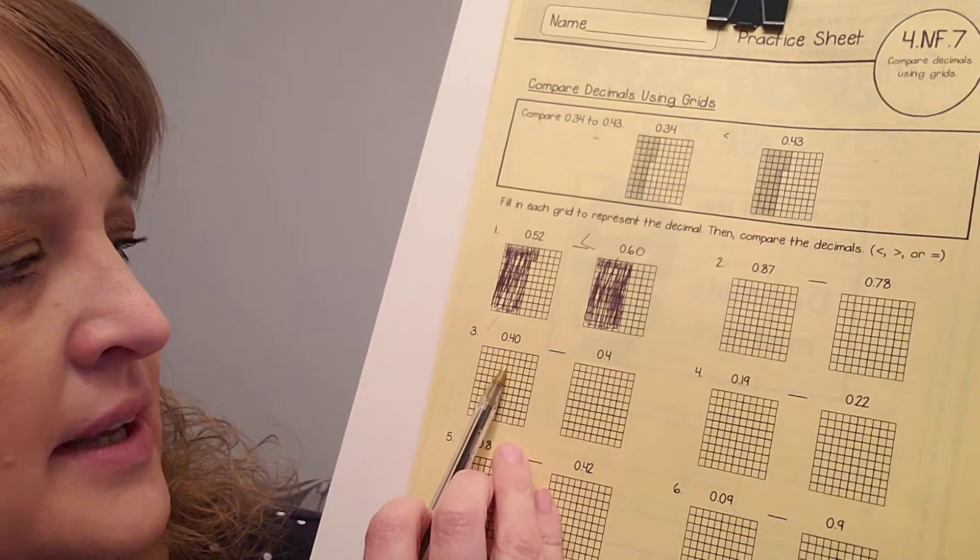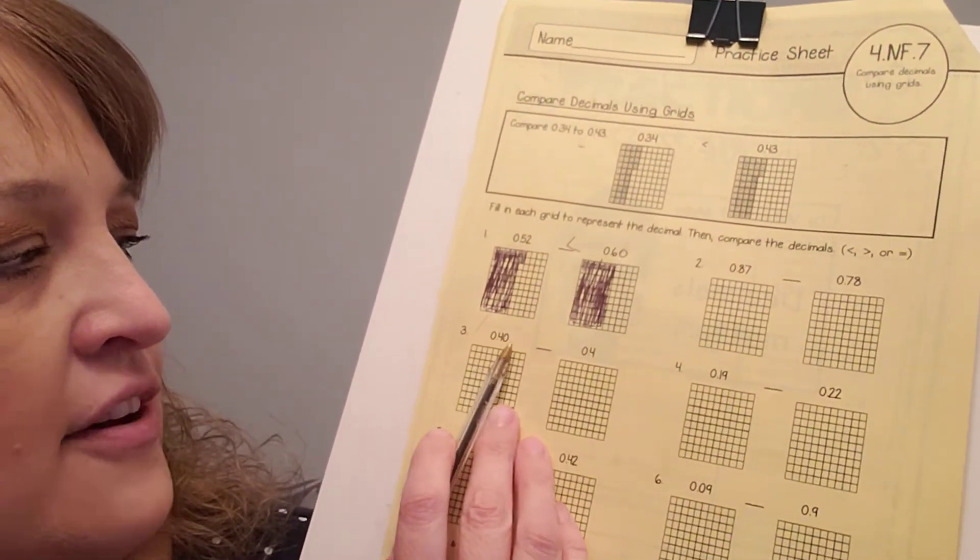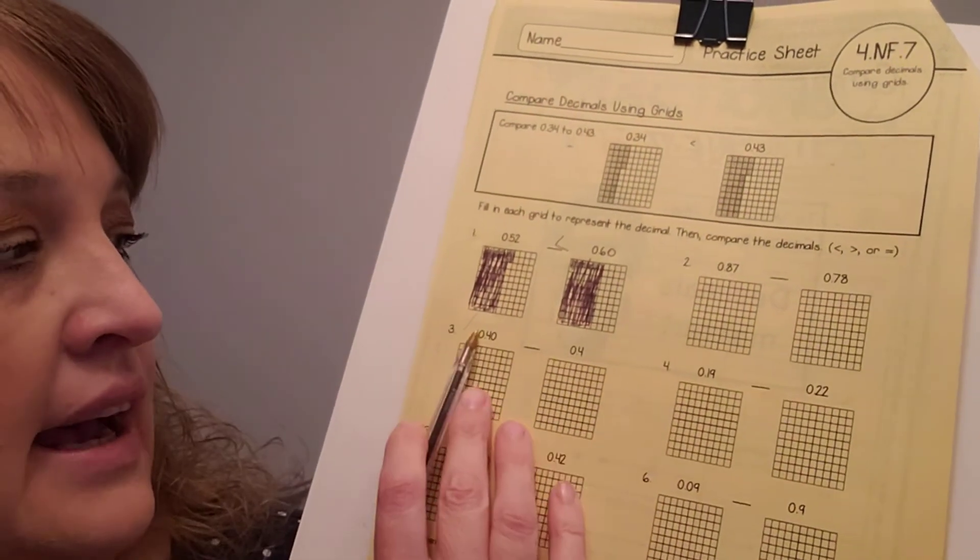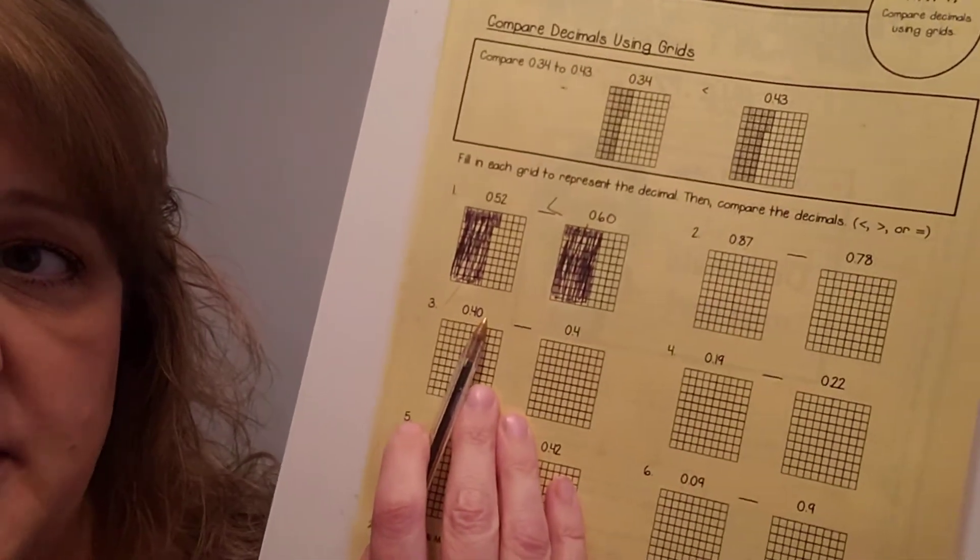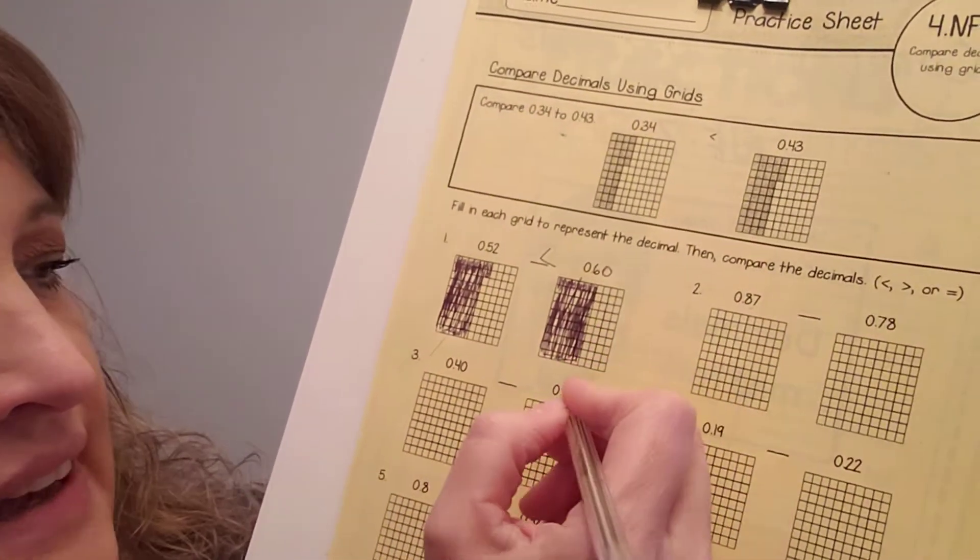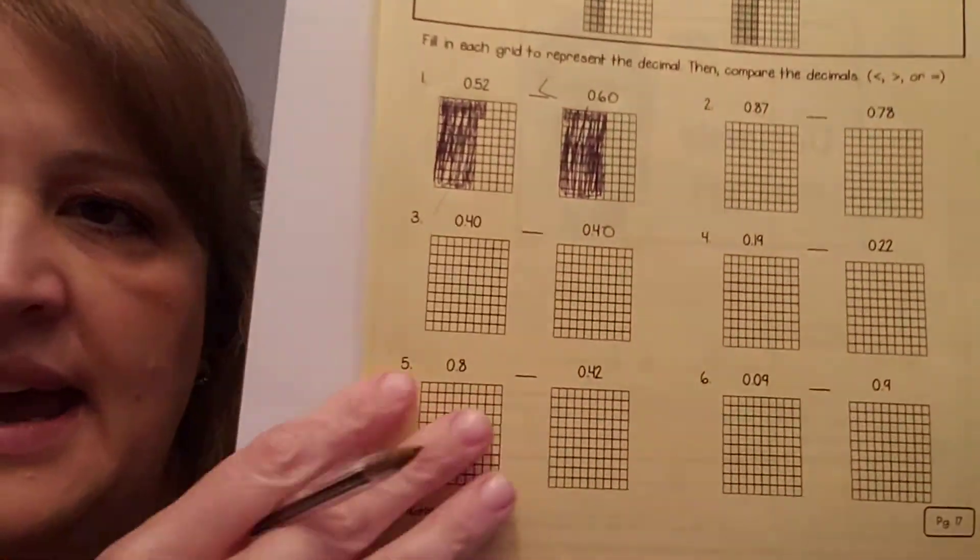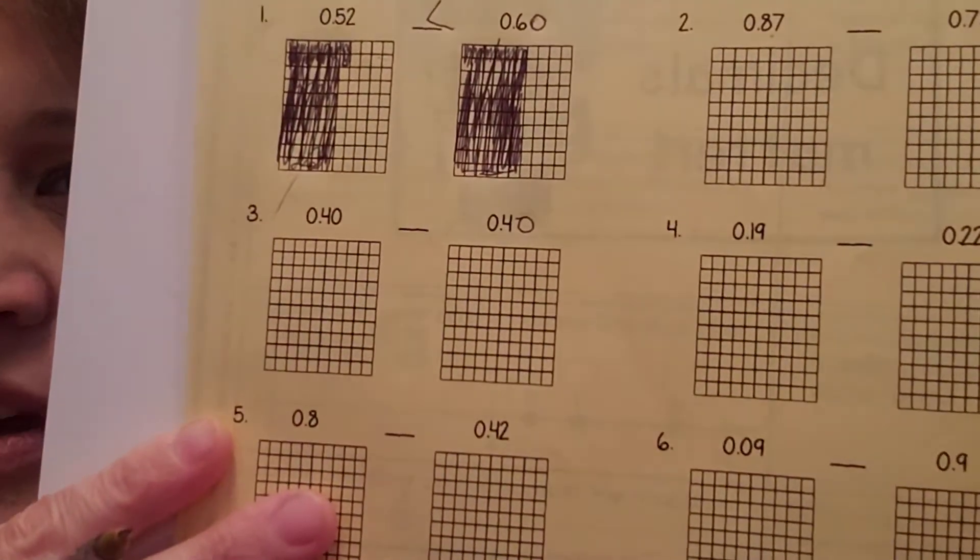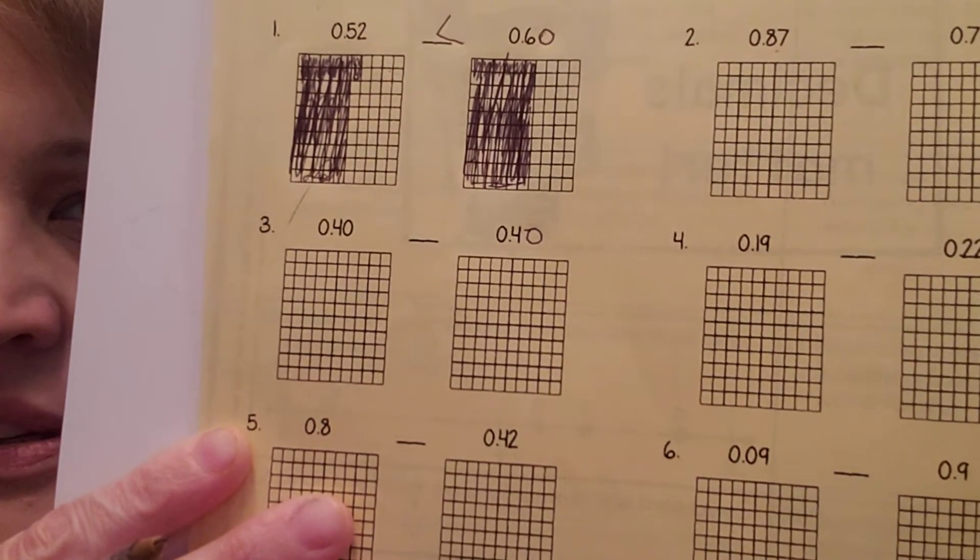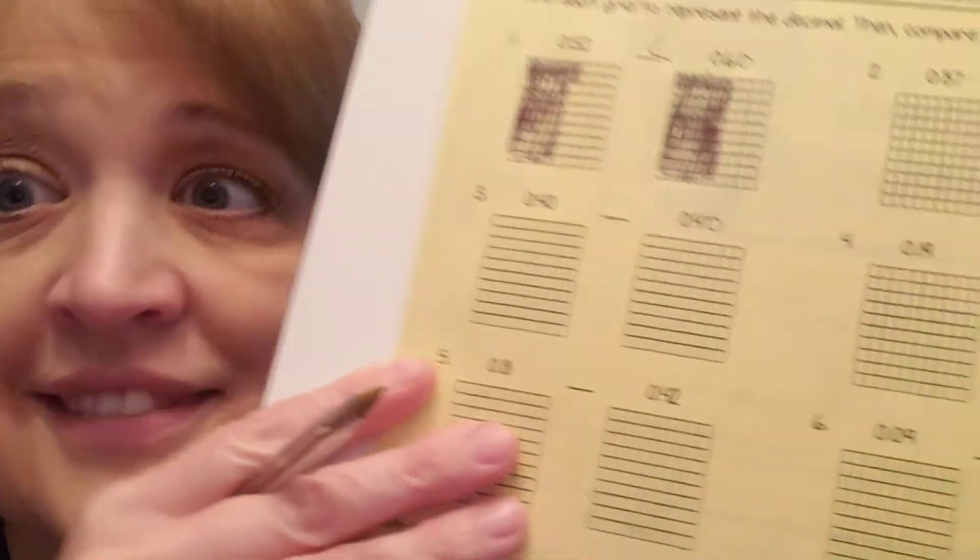How about this one? So, answer that question. What about this one? I have forty hundredths, and I have four-tenths. Well, I need to compare the same to the same. So, if I have forty here, I can add a zero at the end, because I'm multiplying by ten, and now I have forty hundredths and forty hundredths. Those are equal.